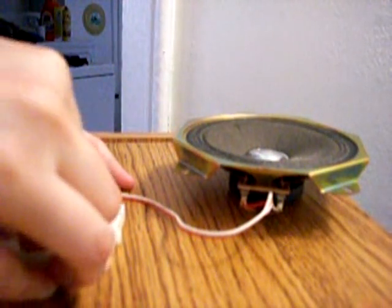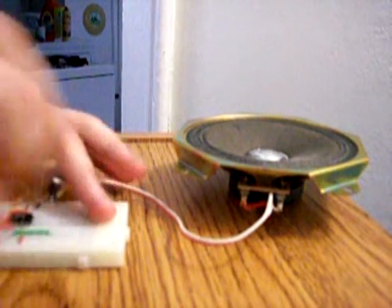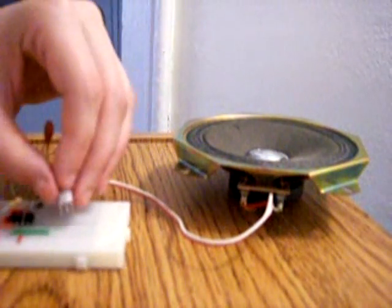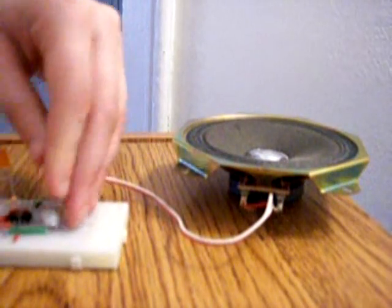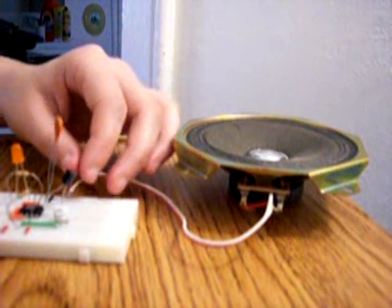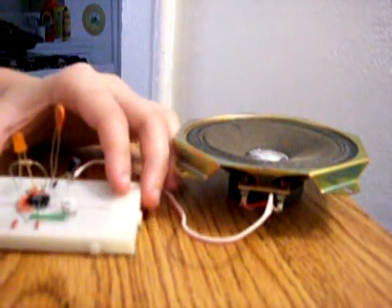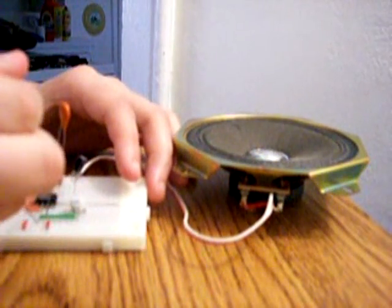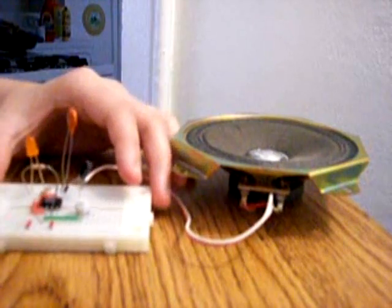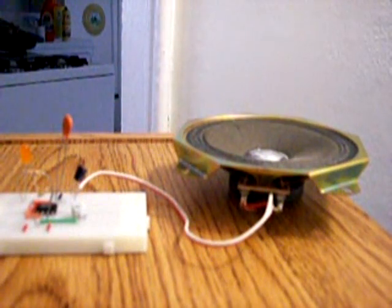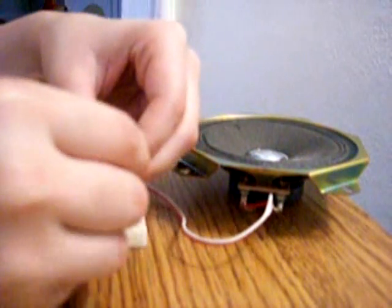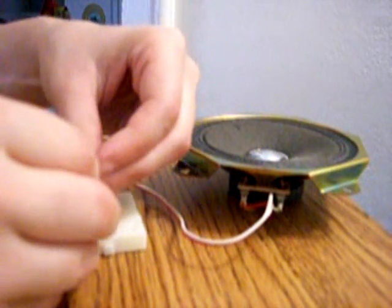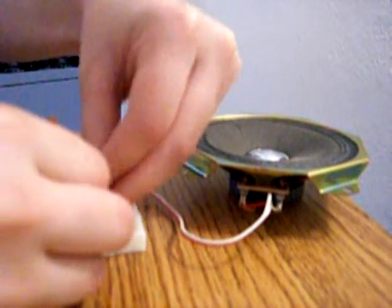There we go. And then I'm going to connect the potentiometer over here. And now I need to do the 1K from power to one of the pins on the potentiometer. So I'm going to do it up here.